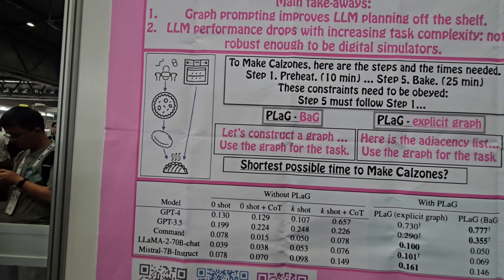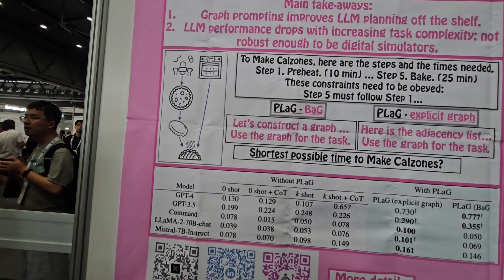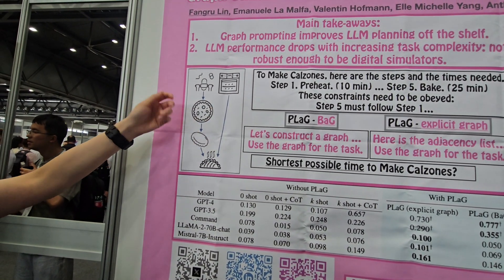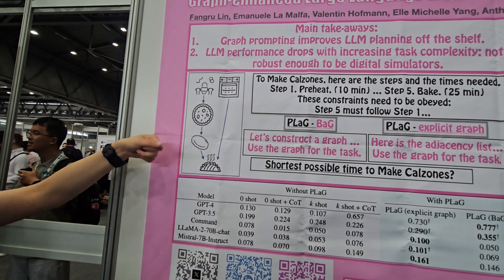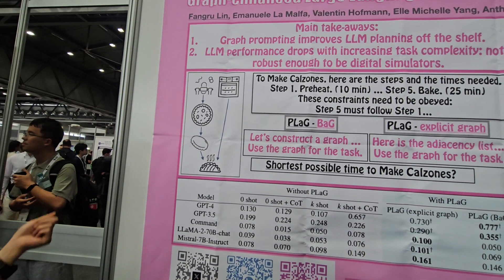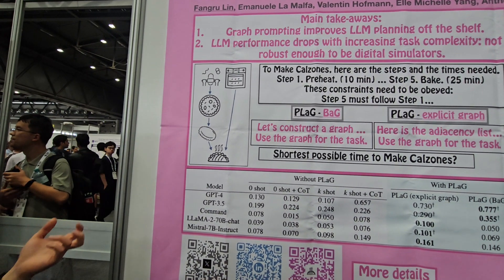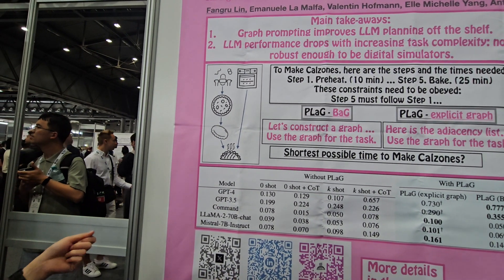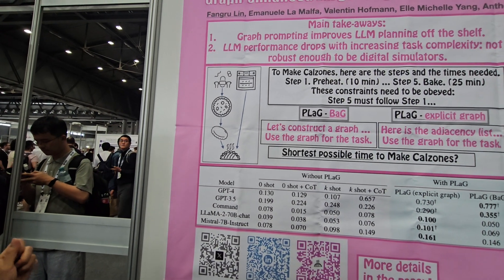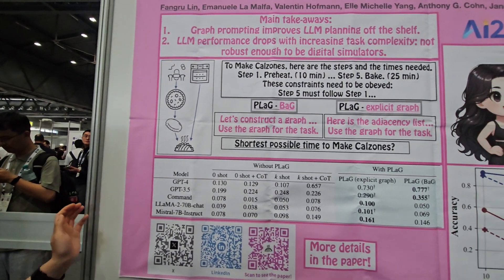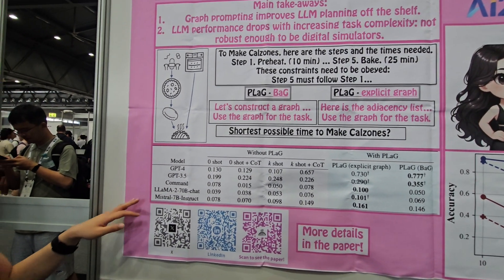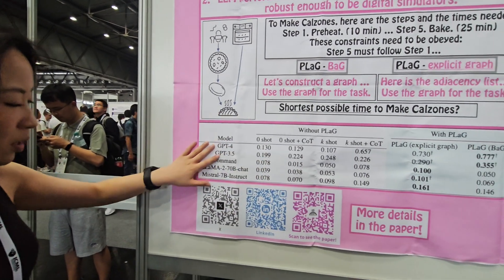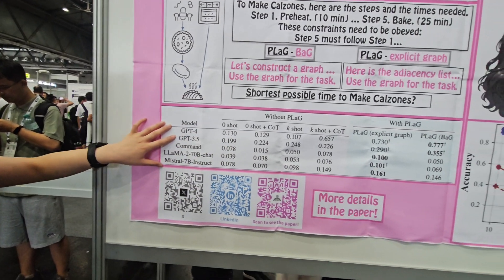We propose a method which we call 'Plan Like a Graph', which tells the language model to do complicated planning by generating a graph first and then solving the task. We find that our method actually outperforms the baseline methods across all the models we evaluated.